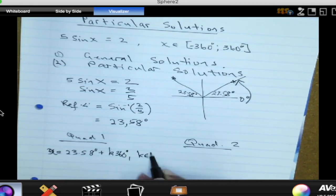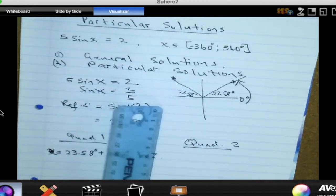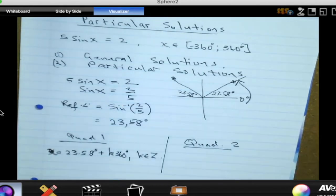What do we do? We can add as many 360s as possible, so plus K times 360 degrees, where K is an element of the integers. So this is the general solution for all the angles that we can get from quadrant 1.